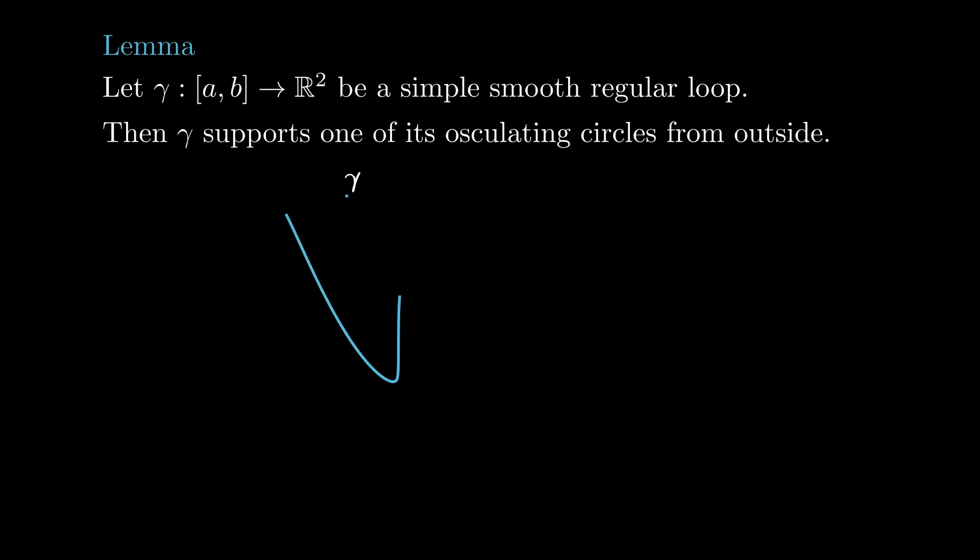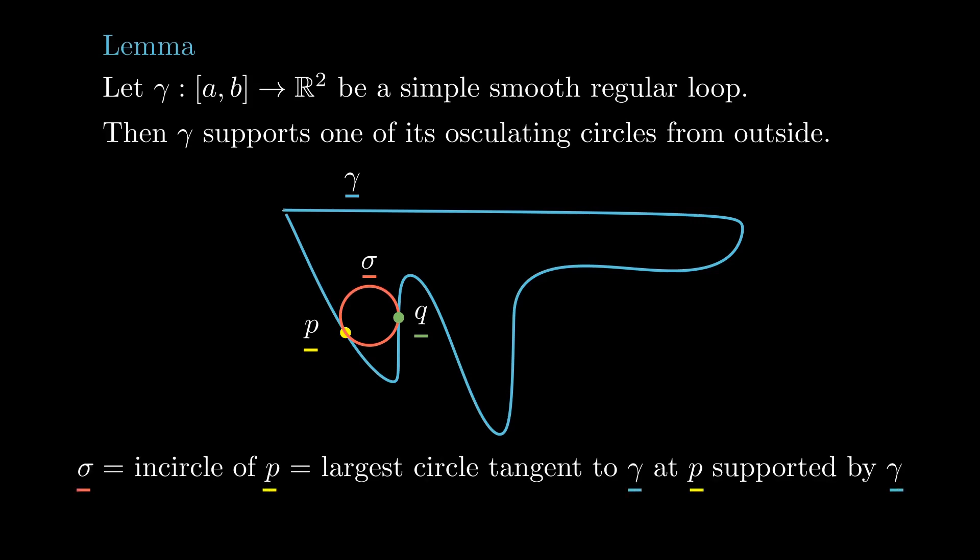To prove the lemma, consider a loop gamma as in the statement, which without loss of generality we can assume to be traveled counterclockwise. For each p in the curve different from the base point, we can consider the largest circle tangent to the curve at p and contained inside of gamma, in our language supported by gamma from the outside. This circle will be called the in-circle of the curve gamma at p.